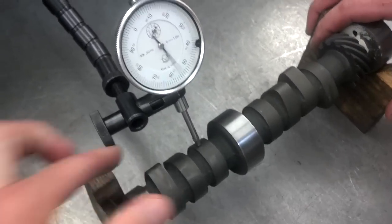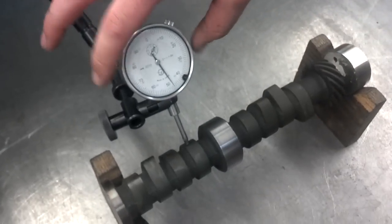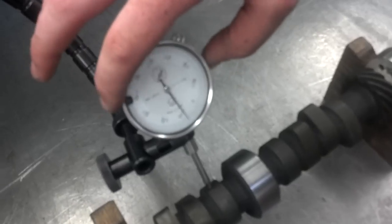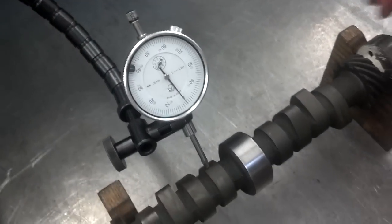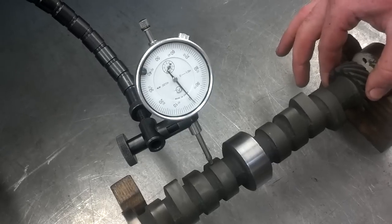We want to start out on the low side of the lobe. We'll zero the dial indicator, and again, rotate the camshaft.